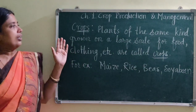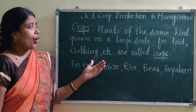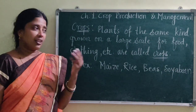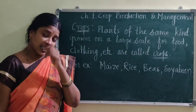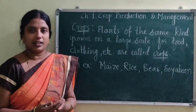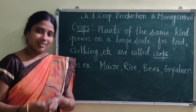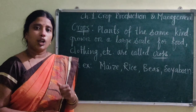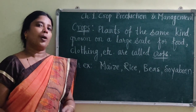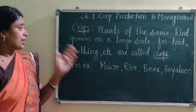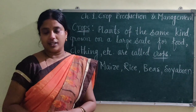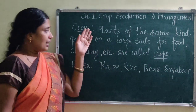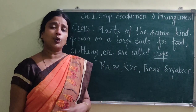For growing all these crops, the seasons required are different because the favorable conditions for different crops are different. Some plants require hot weather and more amount of water; some crops require less water or require winter season. As the requirements for different crops differ, therefore the season in which they grow also differs. On the basis of their requirements, crops are classified into three main categories.